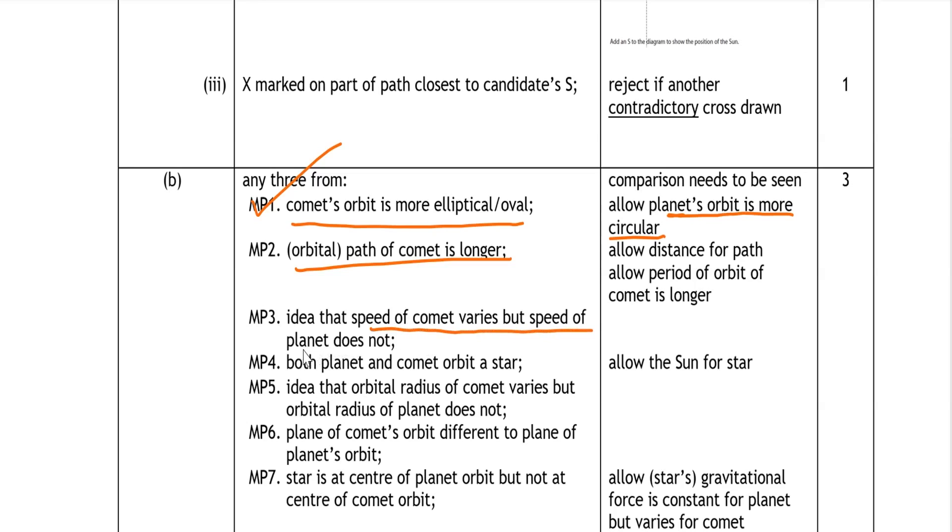Both planet and comet orbit a star, the Sun. Orbital radius of the comet varies but orbital radius of planet does not. Plane of comet's orbit is different to the plane of the planet's orbit. Star is at the center of the planet's orbit but not at the center of the comet's orbit.